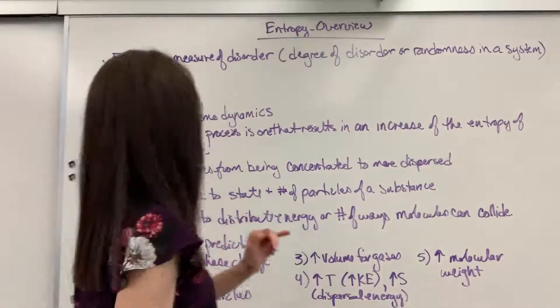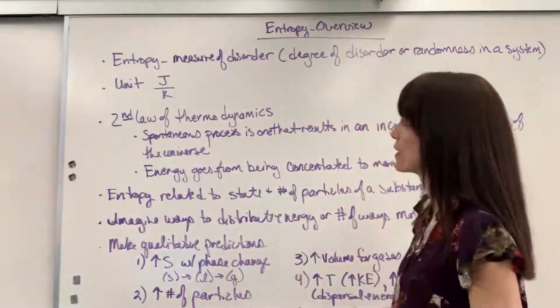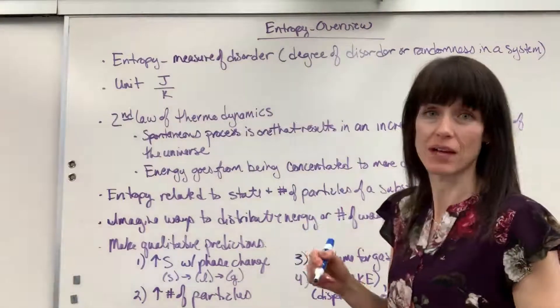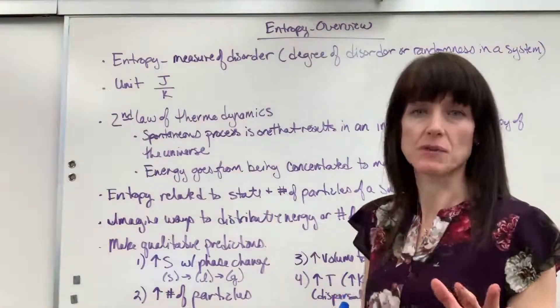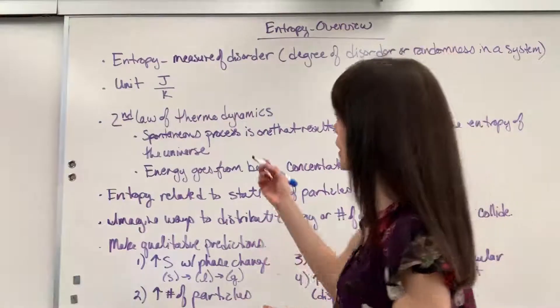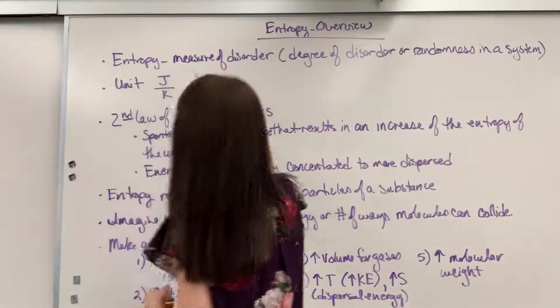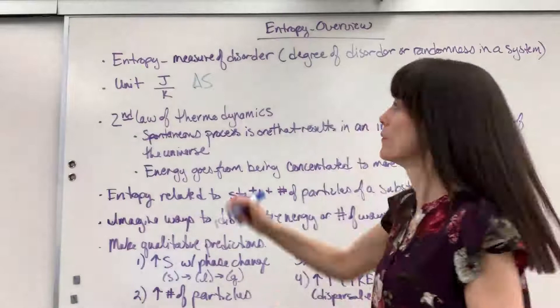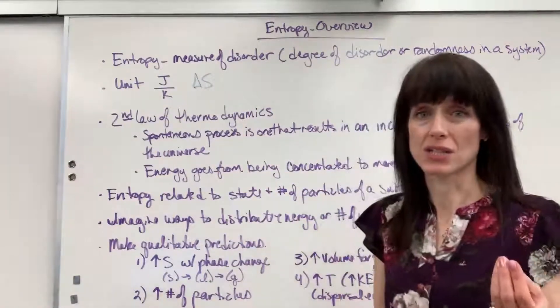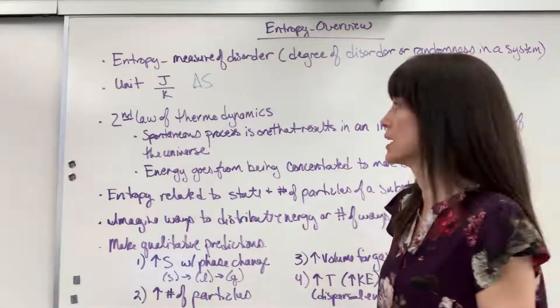Now, our unit for entropy is joules over Kelvin. Honestly, that really just comes from Gibbs free energy, but joules over Kelvin. And remember, entropy, we get the symbol delta S. So that delta means change. That's going to be a change in entropy.